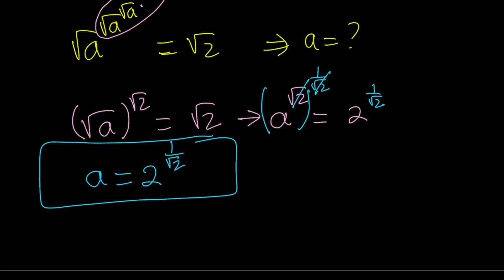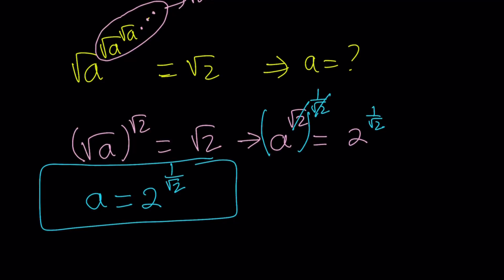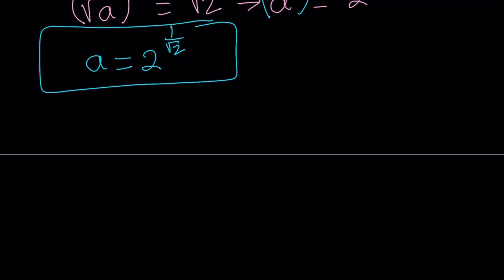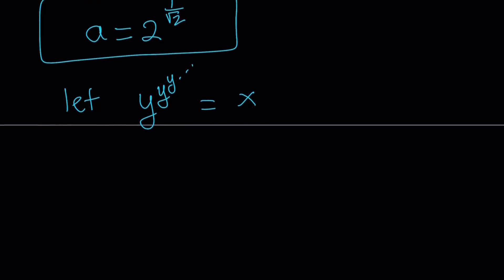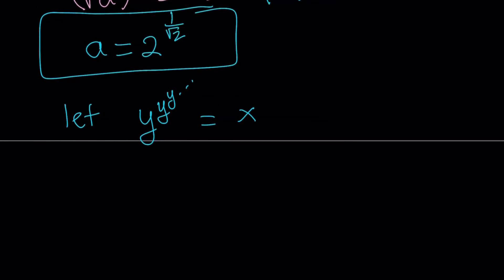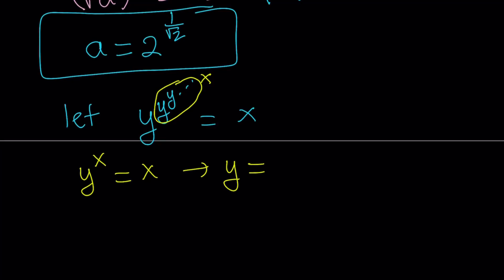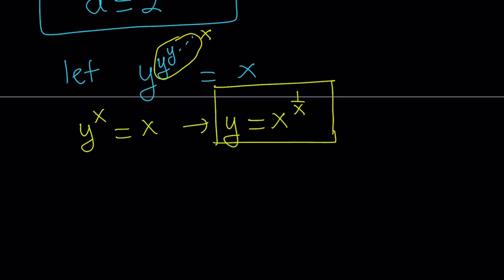That gave us an a value, so let's take a look at whether this is the only solution. Let y to the power y to the power y, dot dot dot, equal x — this is why I wanted to save x for this purpose, because what I have on the left hand side is not x or square root of x. Now I want to do the same substitution. This is going to equal x as well, so from here I get y to the power x equals x, which means y equals x to the power 1 over x. This is a very interesting function.